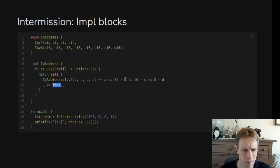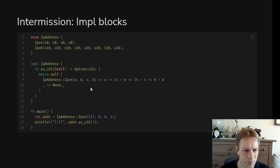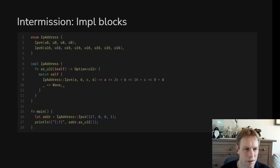The calculation here involves shifting bits. It returns an Option because it might not work out — I'm not sure what this underscore is here; I think that's a typo and it should just be an underscore to None. But the general idea of this code is that you can write methods on things, even enums.